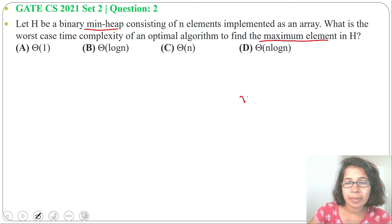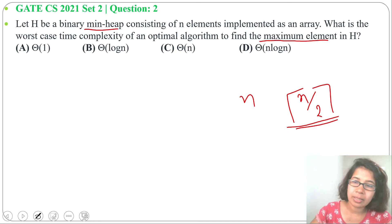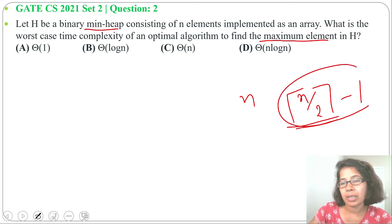If there are n elements in min heap, there are n divided by 2 ceiling function elements in leaf. Next, we need to compare these elements for finding the maximum element. We need to do comparison in leaf. So how many comparisons will be there? There will be n divided by 2 ceiling function minus 1 comparisons. So that we can write as theta of n.